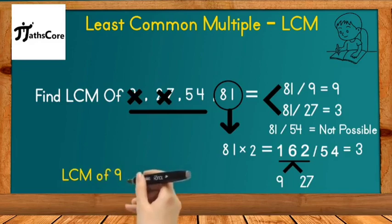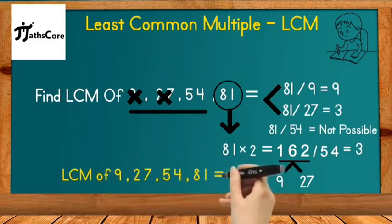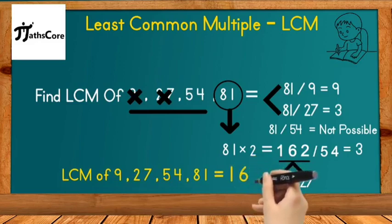In this way, the LCM of 9, 27, 54, and 81 is 162. This is your final answer.